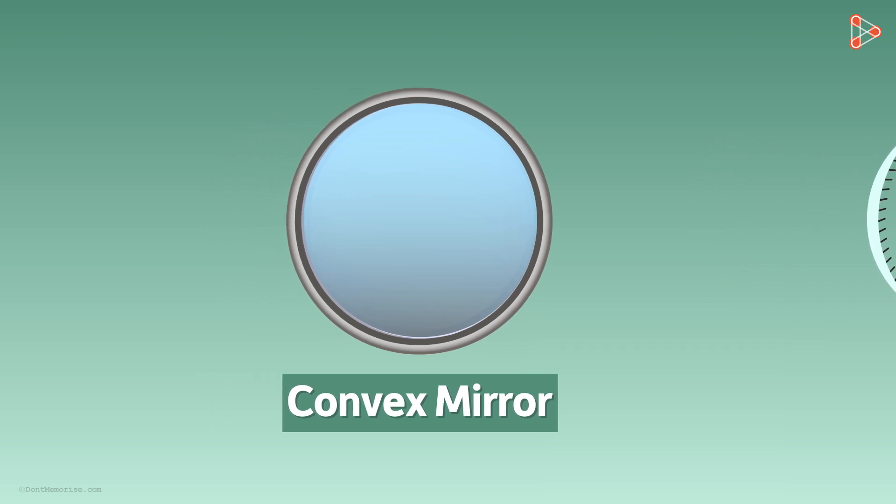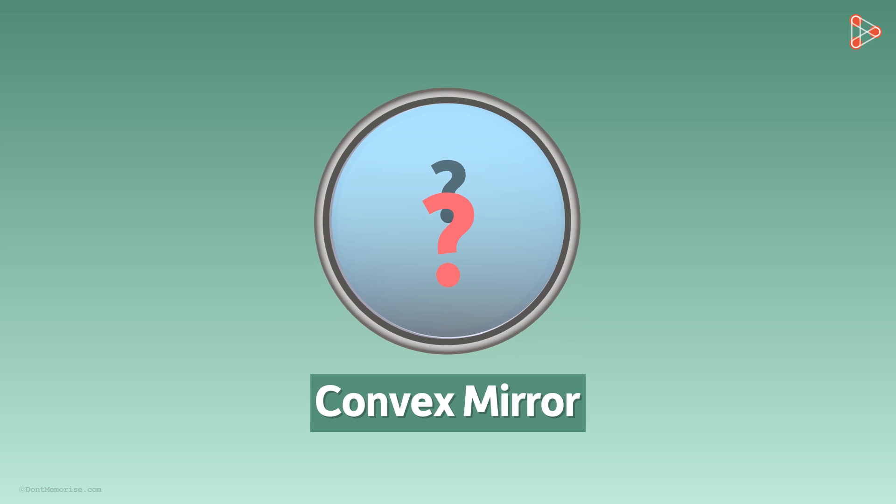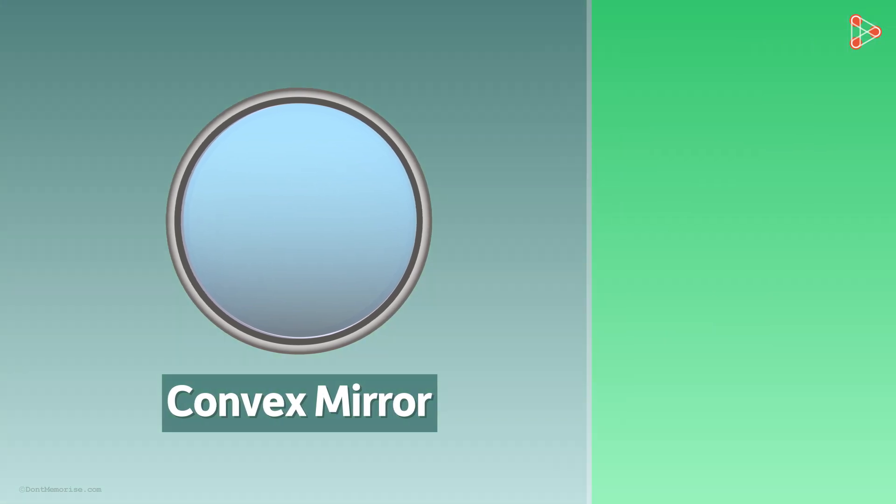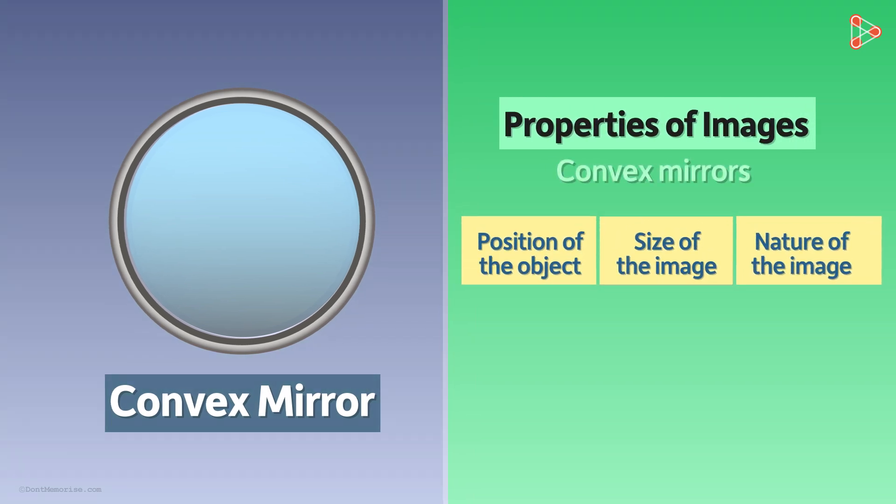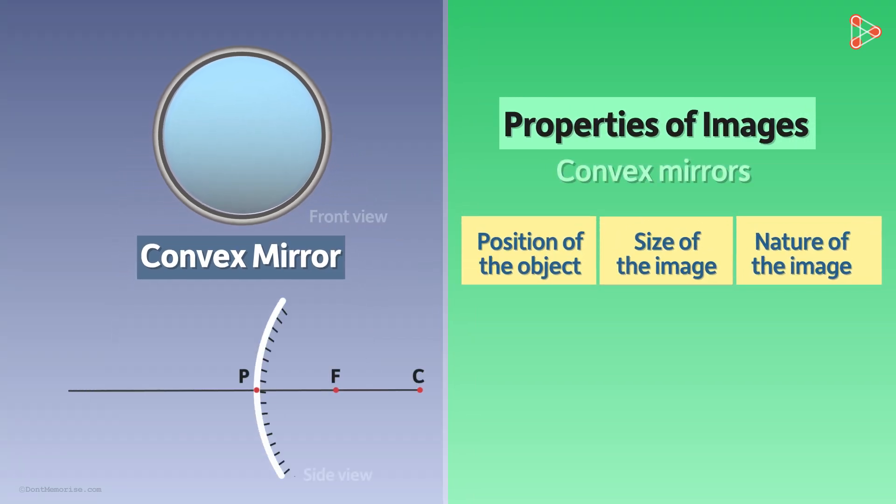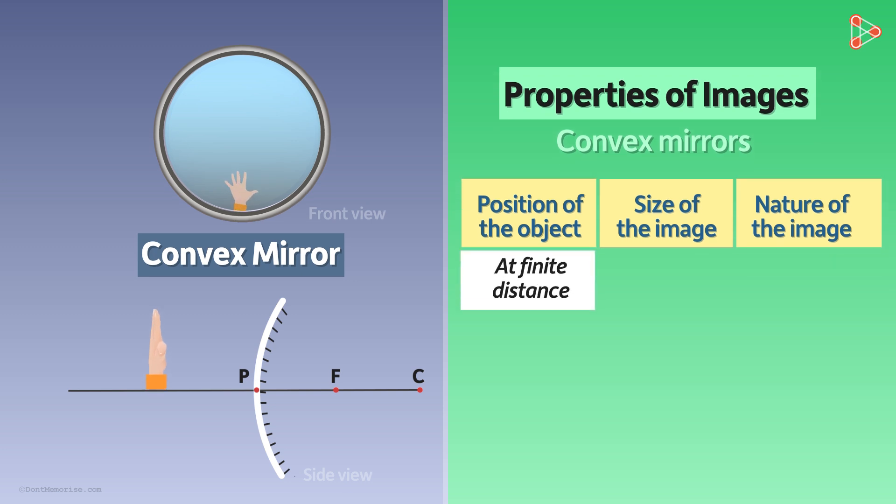The question now is, how does an image formed by a convex mirror look like? Without further ado, let's find that out. We will draw a table on the right just like we did for a concave mirror. Here is our convex mirror. Suppose an object is kept at a finite distance away from it. Look carefully at its image formed.